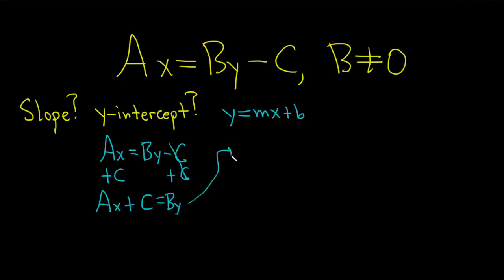I'm going to write it backwards. It's BY equals AX plus C. We're looking for Y and it's being multiplied by B. We know B is not 0, so we can divide both sides by B. Instead of dividing the entire side, we can just divide each piece. These cancel.